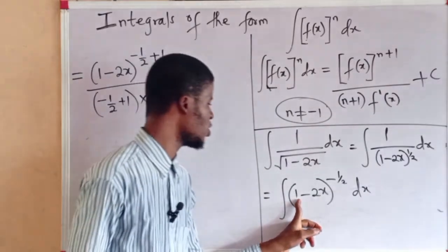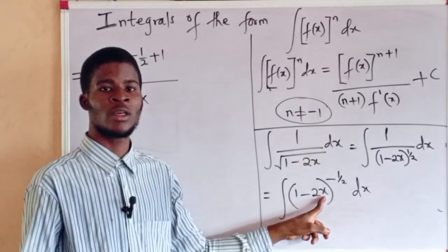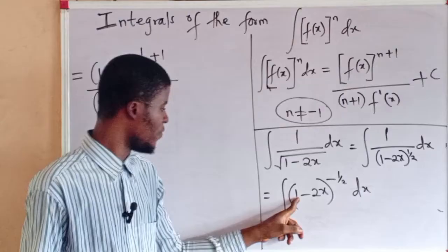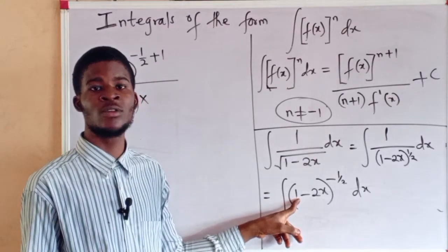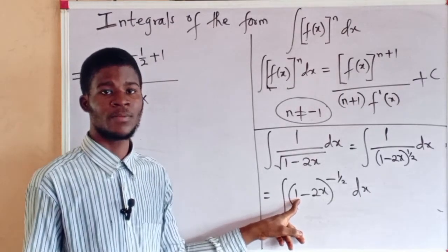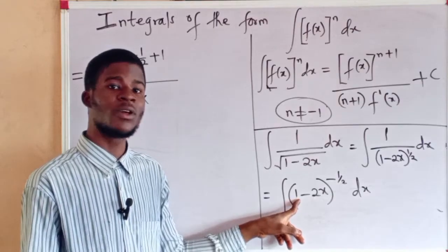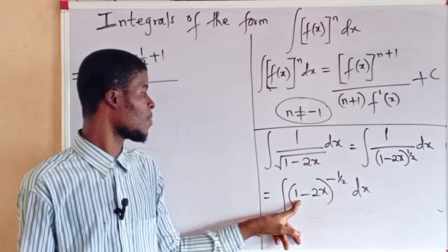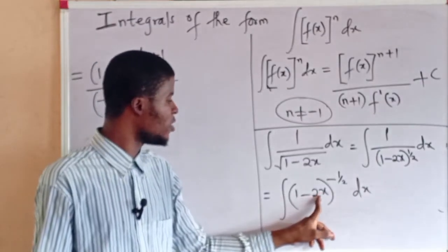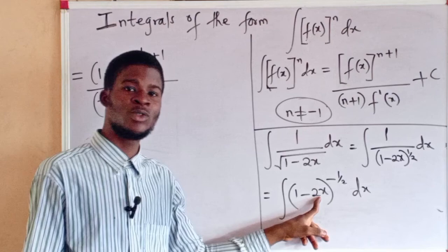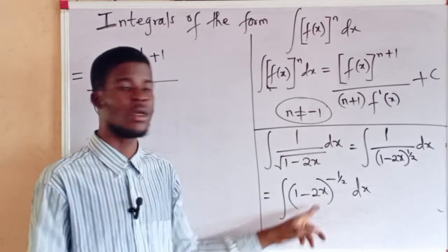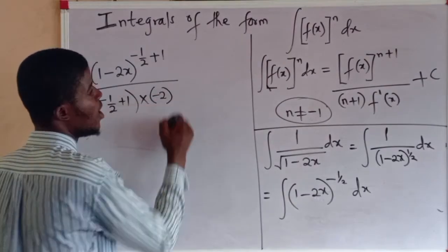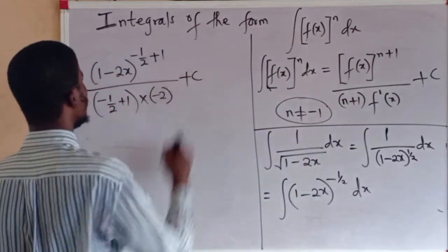Times the first derivative of the function with respect to x. If we differentiate 1 minus 2x with respect to x, we are going to obtain minus 2. How is it so? Differentiate 1 with respect to x, it will give us 0. 1 is a constant, and the derivative of a constant with respect to any variable is 0. And if we differentiate minus 2x with respect to x, we are going to produce minus 2. So we have minus 2 at the bottom.